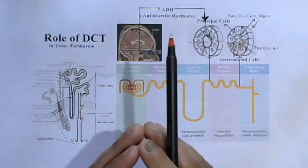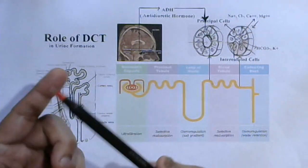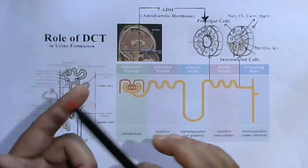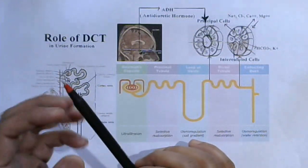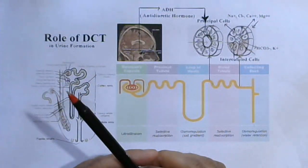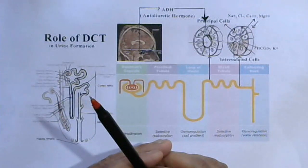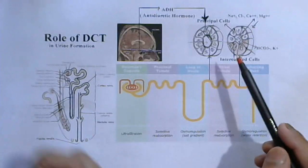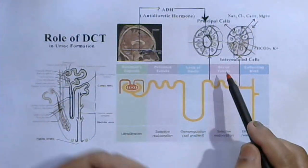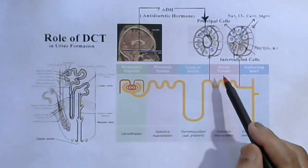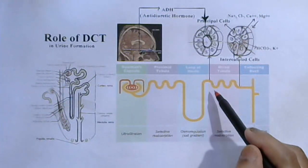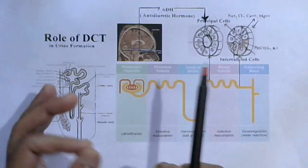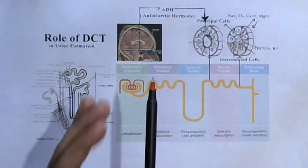The distal convoluted tubule has several functions. Number one: it helps in regulation of glomerular filtration rate and also controls the renal flow of blood. This distal convoluted tubule also helps in dilution of the tubular fluid by reabsorption of salts like sodium, chloride, and other salts. The distal convoluted tubule also maintains acid-base balance of our body by secreting hydrogen ions.